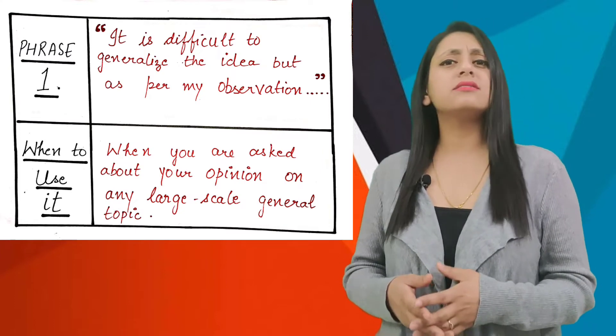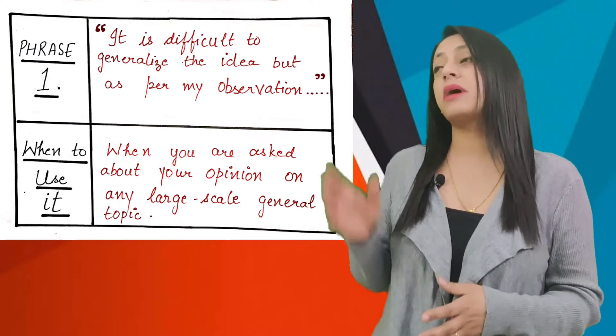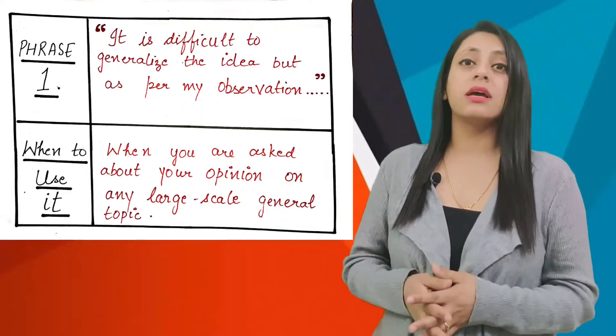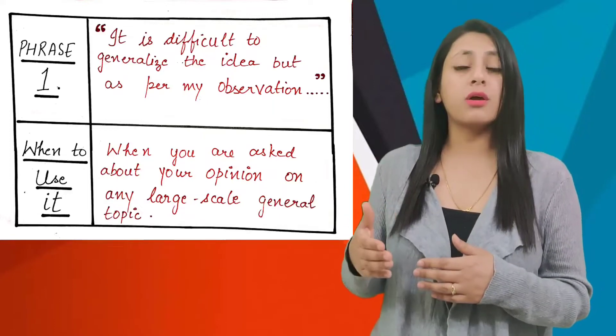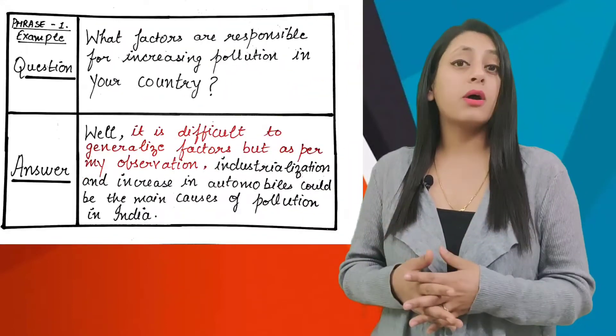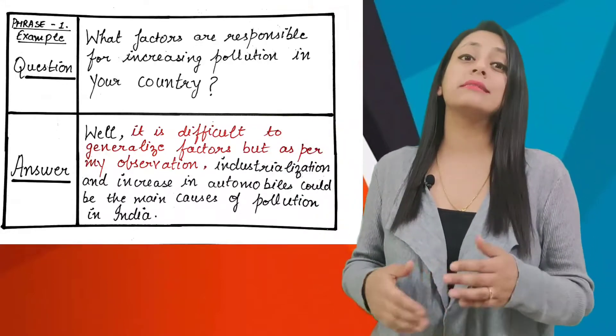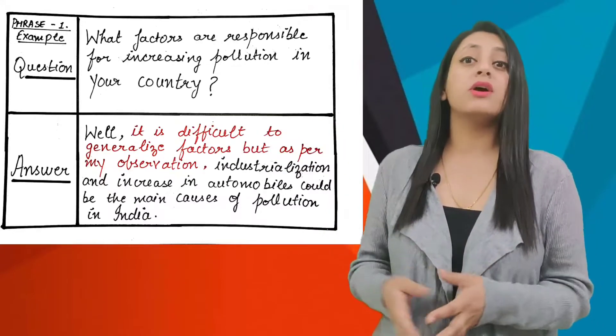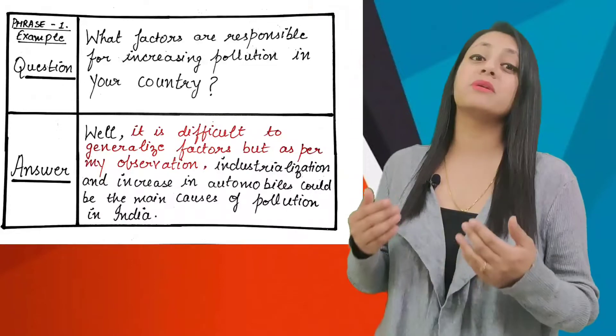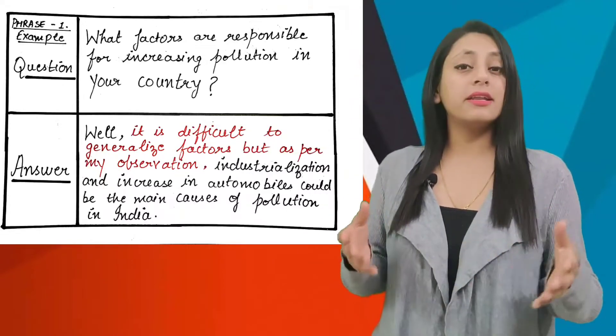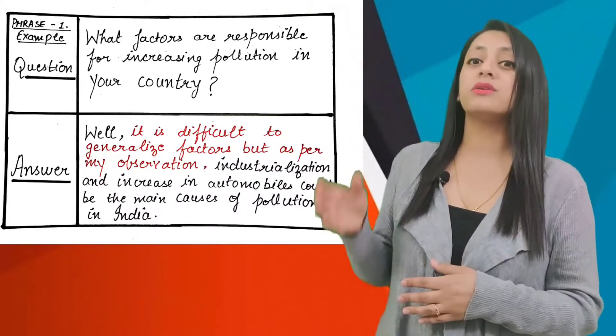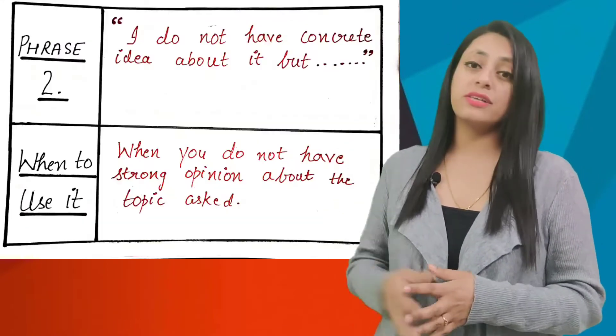First phrase is: It is difficult to generalize the idea but as per my observation. How do you use it? An increase in automobiles and industrialization could be the main causes of pollution in India. This is how you can use this phrase while answering.